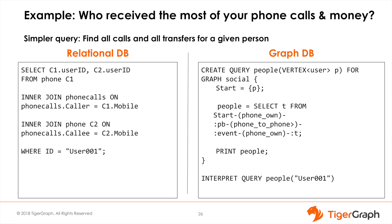In a relational database, we first need to use the phone number table to match names with the caller phone numbers. Then join the phone call table to connect caller numbers with callee numbers. And finally, join again to the phone table to see who is associated with the callee number — that is two joins. In the graph database, we make three hops: from user to phone, from caller phone to callee phone, and from callee phone to user.